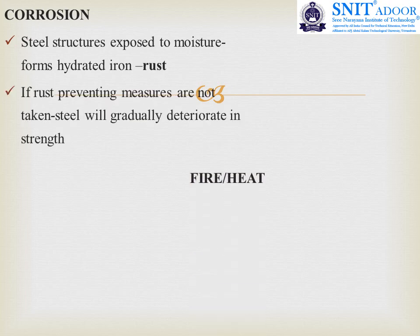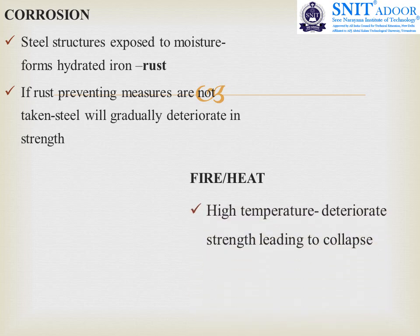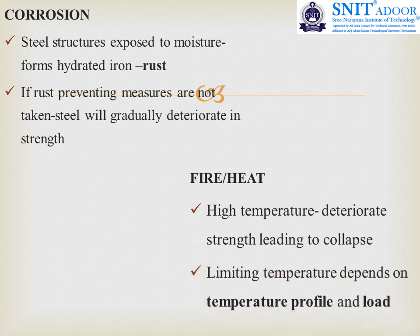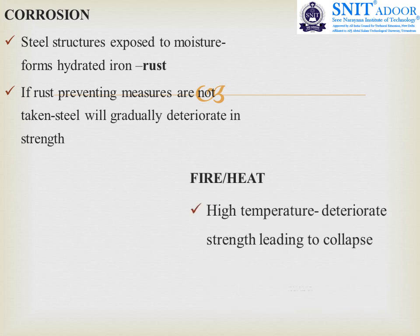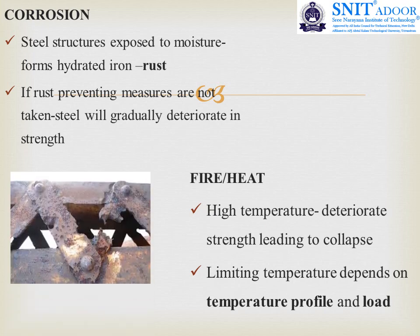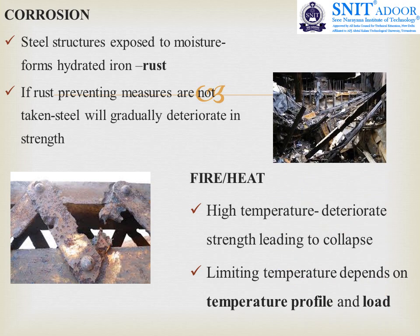Next is the influence of fire or heat. High temperature deteriorates the strength of steel leading to collapse. The coefficient of thermal expansion relates to this — under high temperature, steel has a greater probability of deterioration. The limiting temperature depends upon the temperature profile and the load. You can see the picture of corrosion here — corroded members may lead to deterioration — and here you can see fire damage.